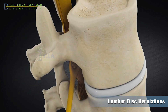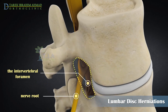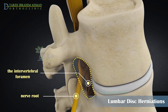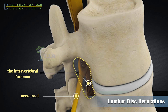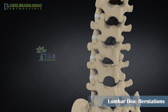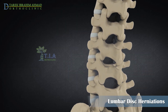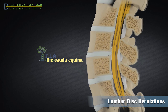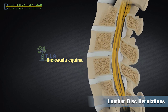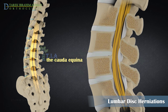Small nerves called nerve roots exit from the spinal cord through spaces between these vertebrae. The nerve roots to the lower back and legs extend many inches down the spinal column before exiting. This large bundle of nerve roots is referred to as the cauda equina, meaning horse's tail.